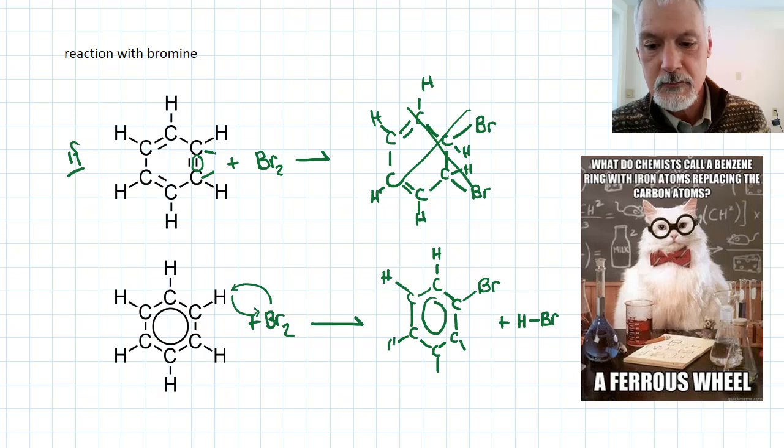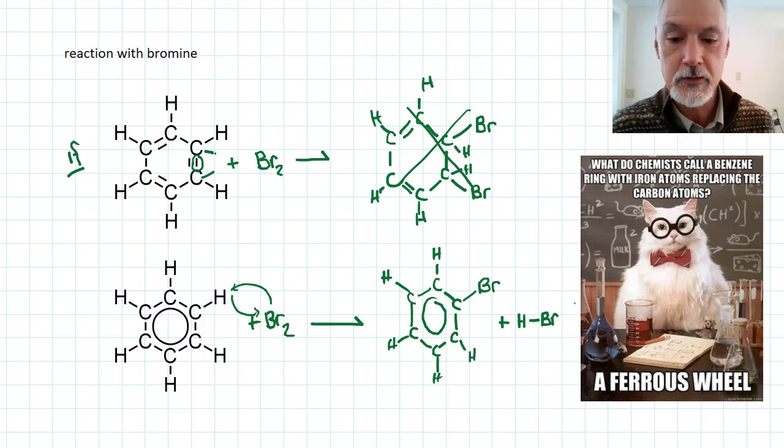So when benzene is placed in a situation with a halogen, it undergoes substitution, not addition reactions, which again supports this model of the atom.